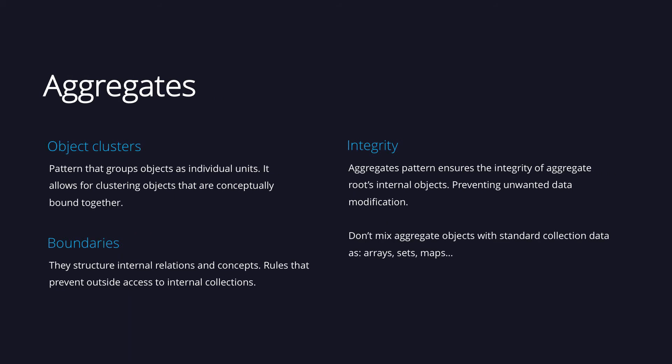Aggregates is a domain driven design pattern that groups domain objects as individual units. This pattern allows for setting up a cluster of entities and value objects which are conceptually bound together. An example of an aggregate is a customer order and its purchased products. The internal relationship, structure and rules within an aggregate is known as its boundaries. If an object wants to access an entity of an aggregate, then it needs to send a request to the aggregate root object.